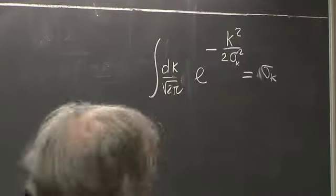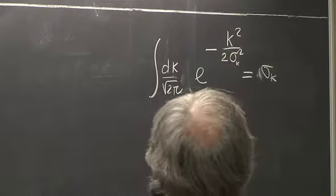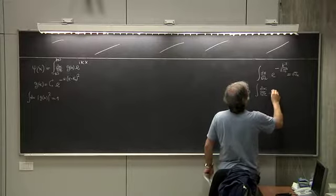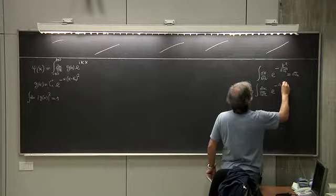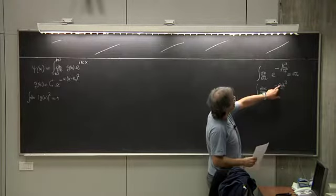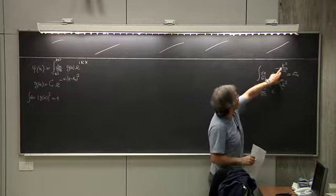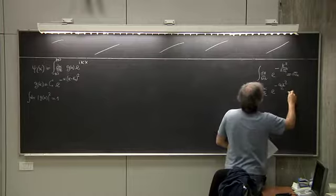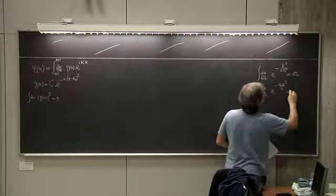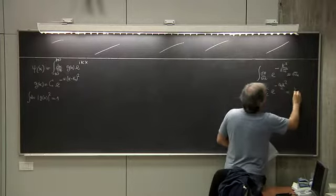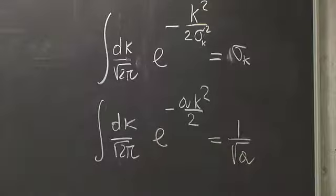Another way of writing the same integral: the integral in dk over square root of two pi of e to the minus a k squared over two, sometimes written with a constant a in front rather than one over sigma k squared. The result is copied from the previous one: you have a equal to one over sigma squared, therefore the result is one over square root of a. Nothing but the same integral.